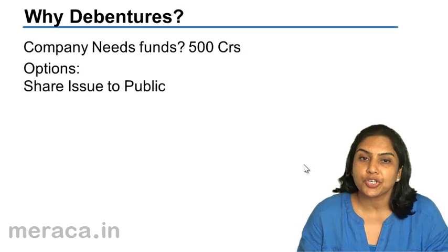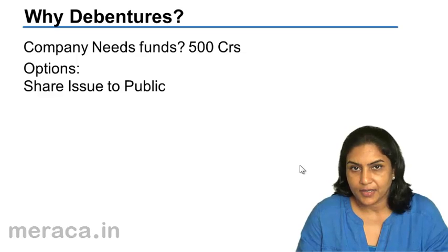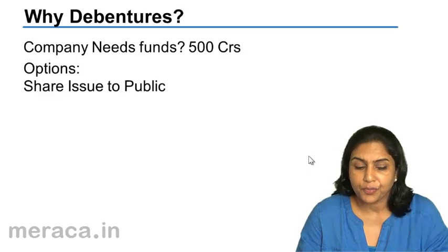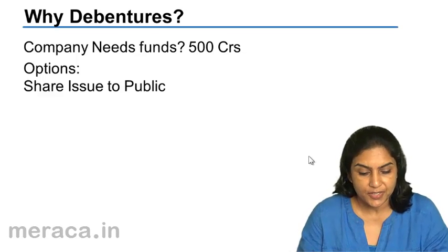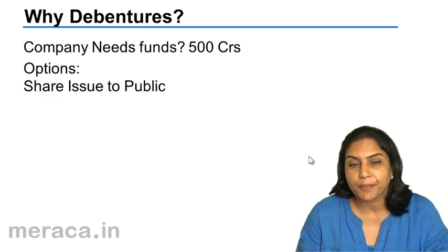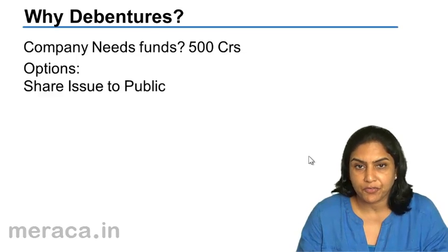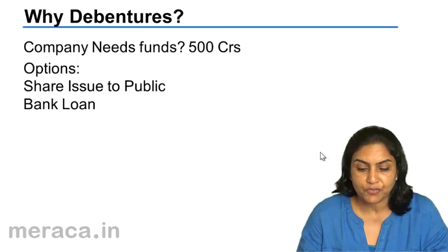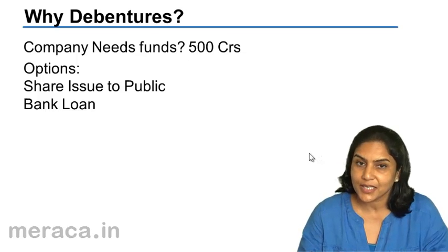It could issue shares to the public, in the form of preference shares or equity shares. Or maybe they could go to the bank and try to take a loan. Since the amount is huge at 500 crores, maybe go to 2-3 banks and take a loan.